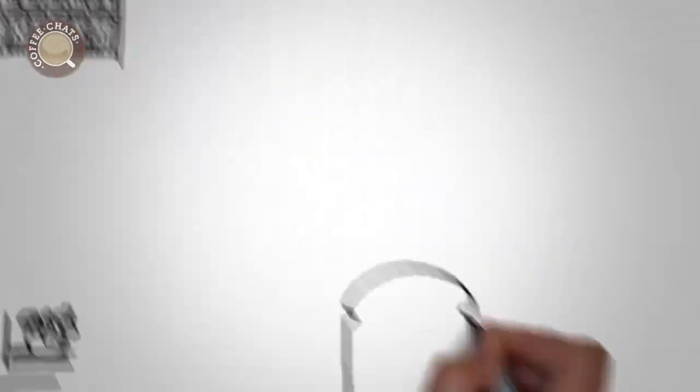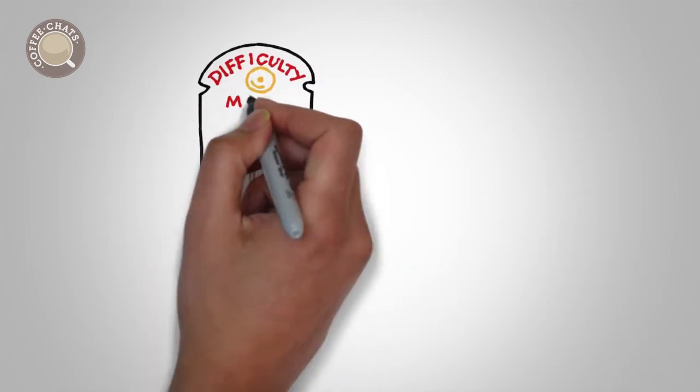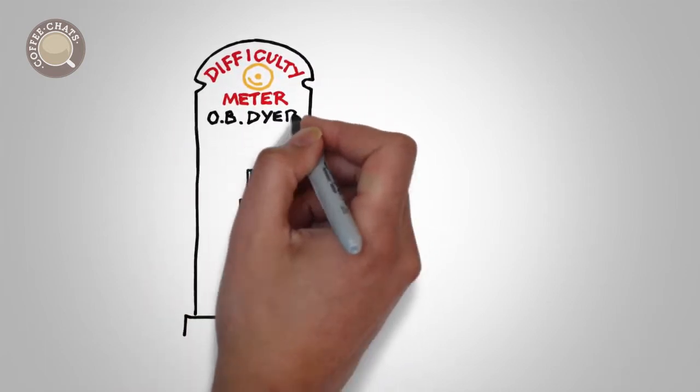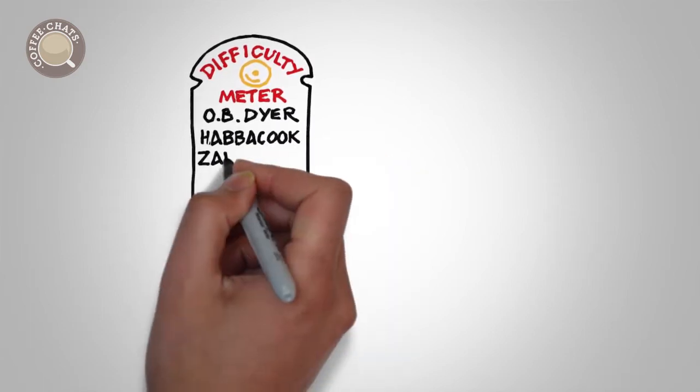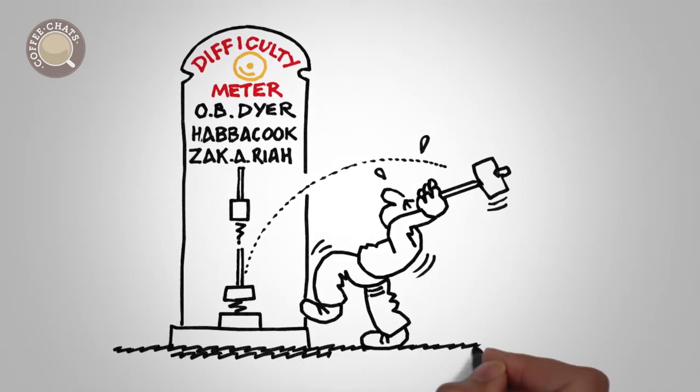For while your Matthew, Mark, Luke, and John are relatively easy, when it comes to your Obadiahs and Habakkuks, Habakkuks, Zachariases, the Bible scores high on the difficulty scale.